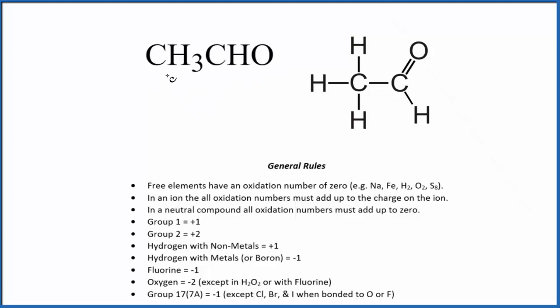First, we can look at the average oxidation numbers. We have two different carbons here, but we can look at an average oxidation number for the carbons, or we could calculate for each specific carbon. So let's do an average first.